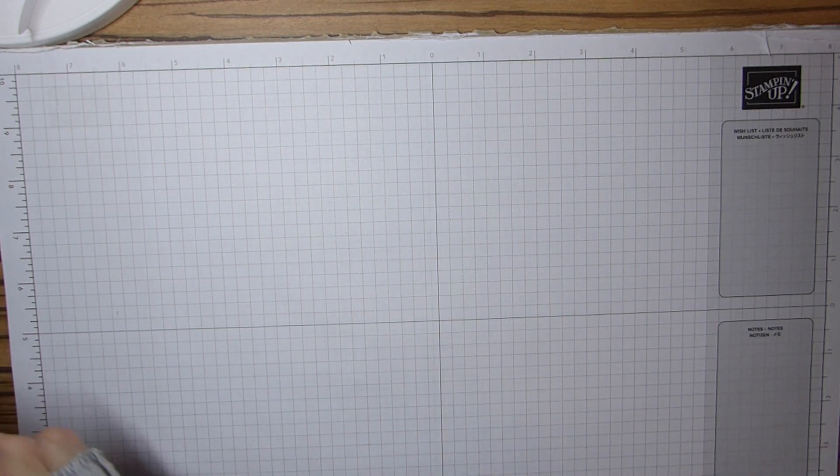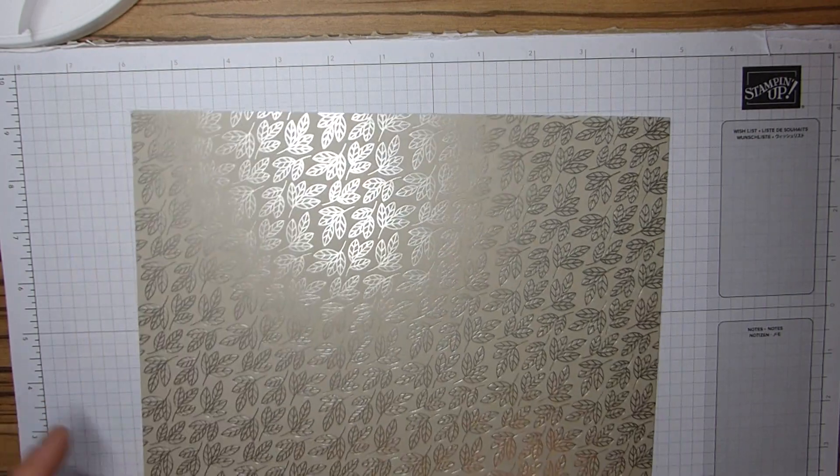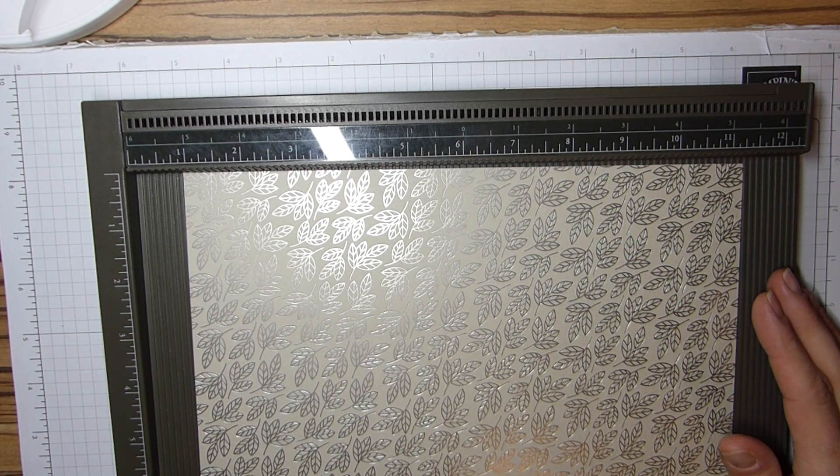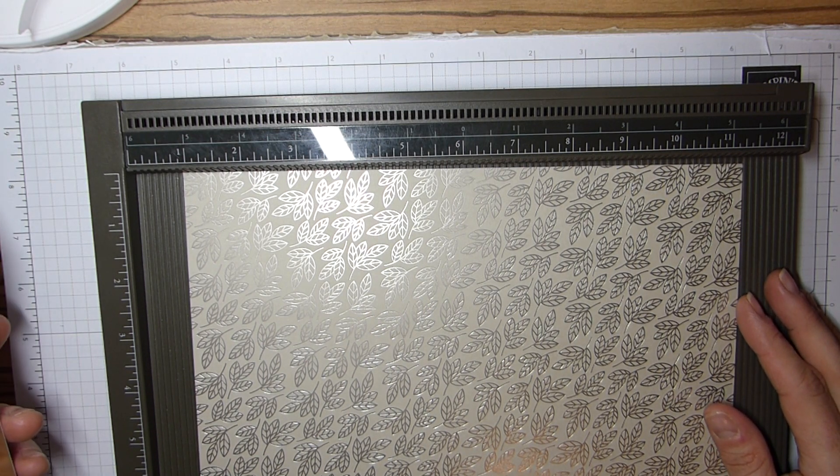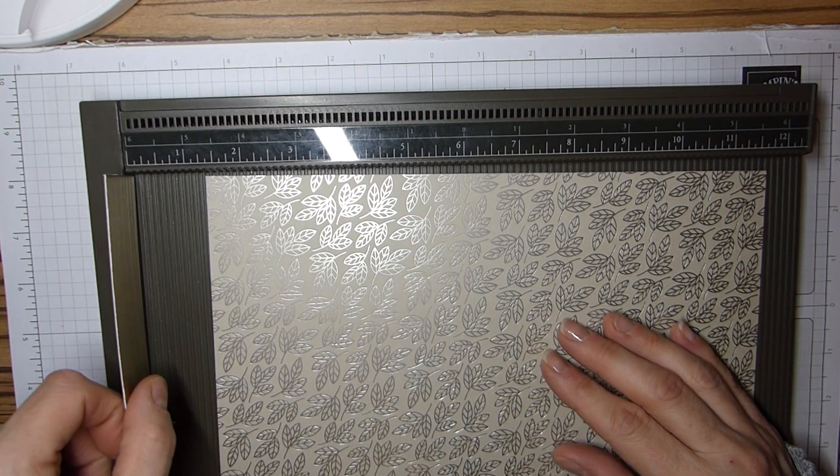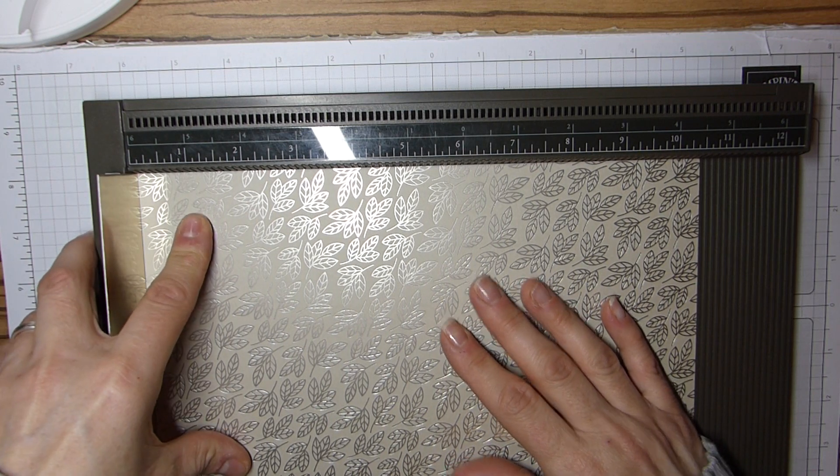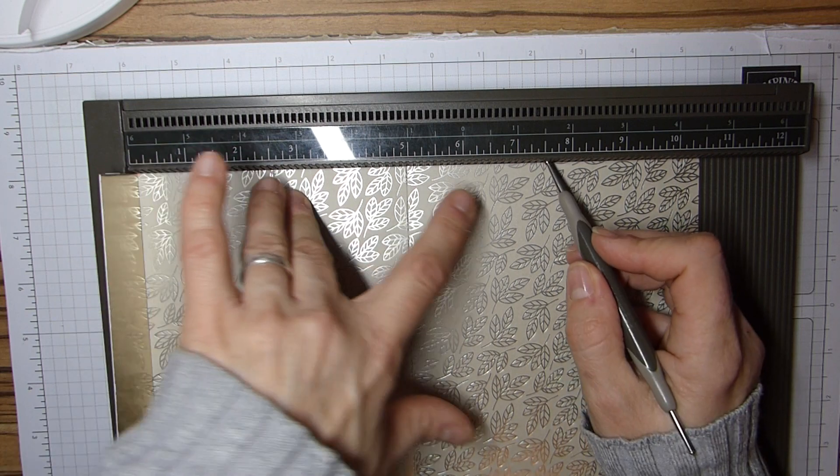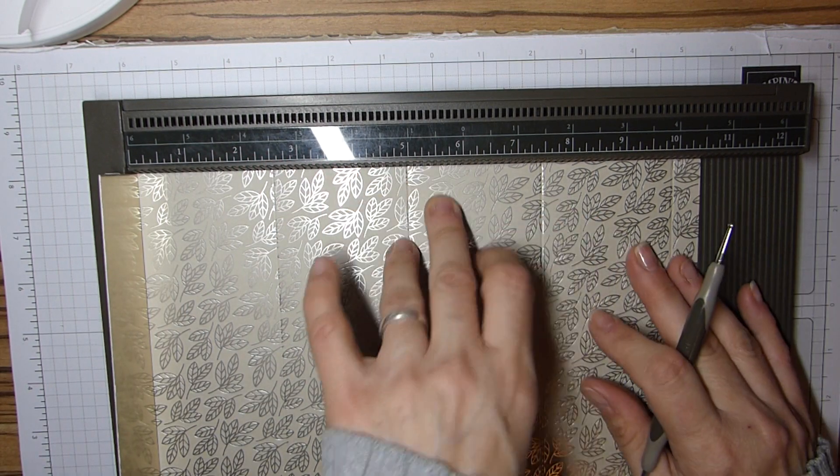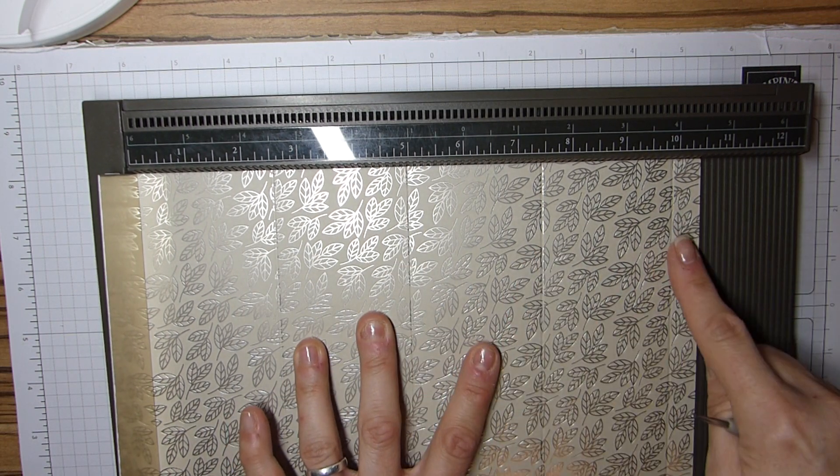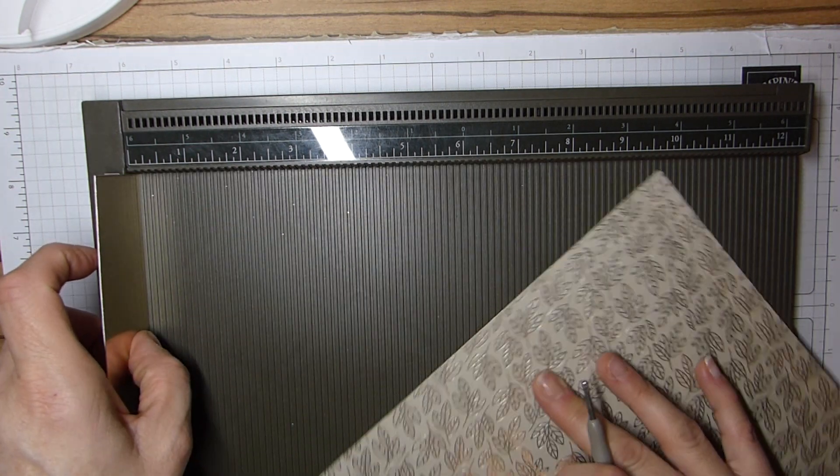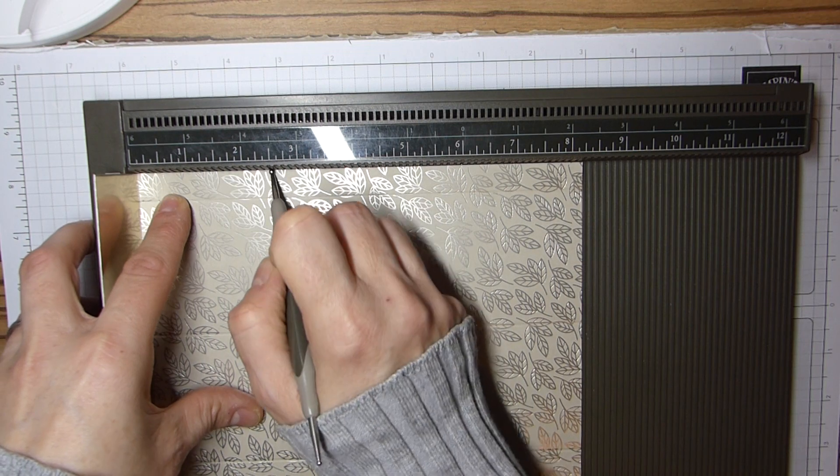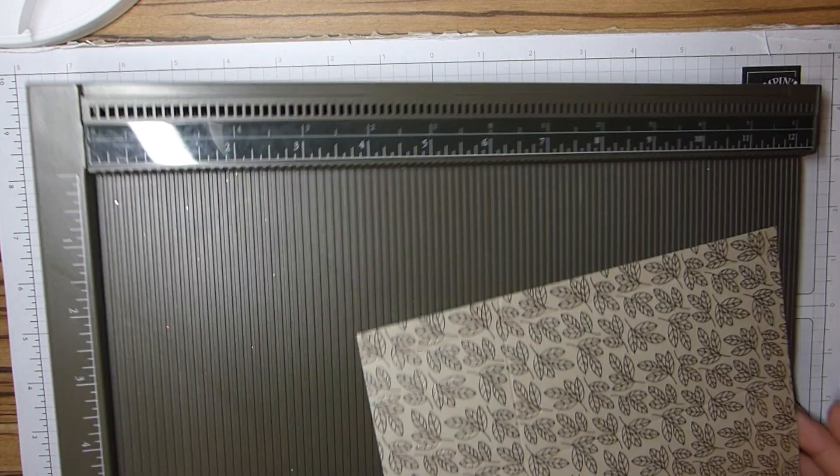So I'll pop these to one side for a minute because now we need to do our lid. So again, I've got some beautiful DSP that is 10 and a half by eight and a quarter inches, which is 27 and a half by 21 and a half centimeters. I've got an off cut of that beautiful paper because I need to use it as a shim. So on the long side, we're going to score at two and a half, five, seven and a half and 10 inches. And in metric, that's six and a half, 13, 19 and a half and 26. And then I'm going to rotate it anti-clockwise, still with my shim in place, and score at two and a half, which is six and a half centimeters.